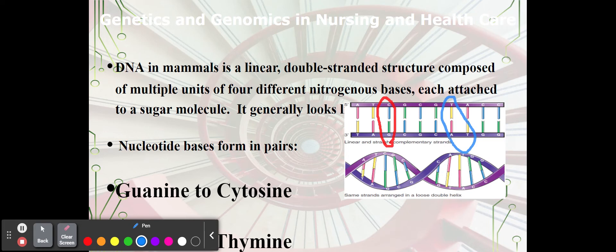So guanine only to cytosine and adenine only to thymine in DNA. RNA, the thymine gets replaced by uracil. Don't get too caught up in that. That's sort of a little more extensive than we need to be. But okay, so you have these base pairs. And all of your genetic information is coded in these base pairs.